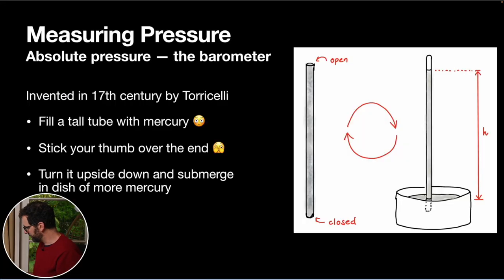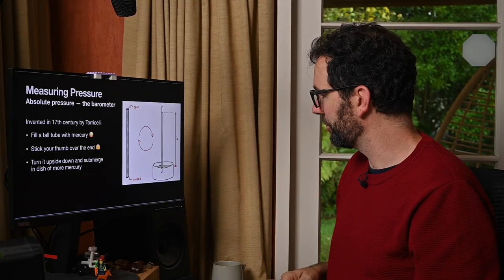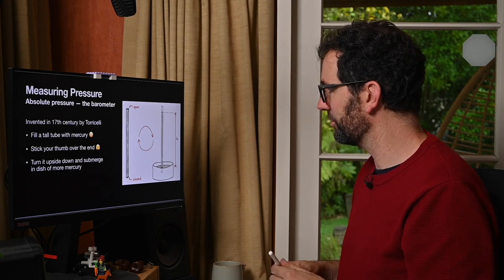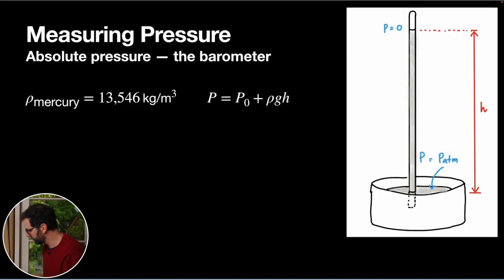We also have atmospheric pressure on the surface at the bottom of the dish. So that gives us the classic easy way of applying our hydrostatic equation to understand the difference here. So let's see if we can do some calculations and figure out how we could measure the atmospheric pressure using this device. One thing we can measure easily is the height.